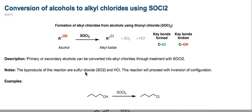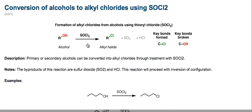When we take an alcohol and treat it with SOCl2 (thionyl chloride), we end up with an alkyl halide — specifically an alkyl chloride. We also make one equivalent of sulfur dioxide (SO2) as well as HCl (hydrochloric acid), although these are often not drawn, which is why I've shown them in gray here.